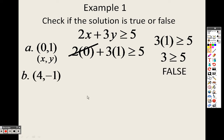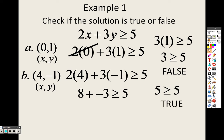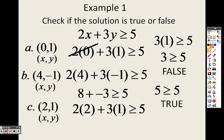How about (4, -1)? If I plug in 4 for X and -1 for Y, I get 8 plus negative 3, which gives me 5 is greater than or equal to 5. That's true, because it says greater than or equal to, and 5 equals 5. And if we try (2, 1), plugging 2 in for X and 1 for Y, I end up with 7 is greater than or equal to 5, which is also true.